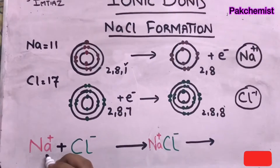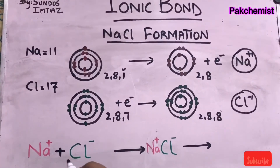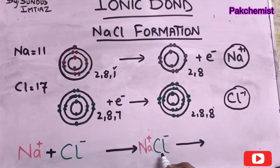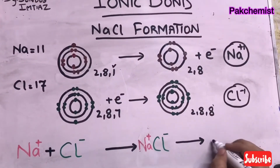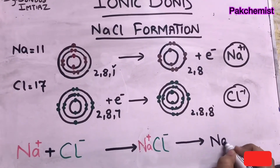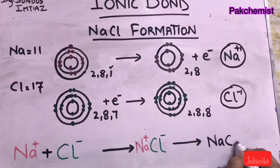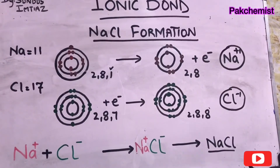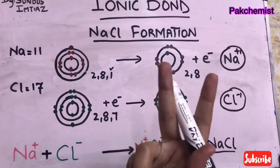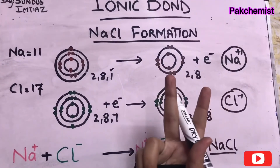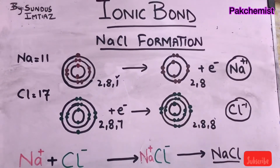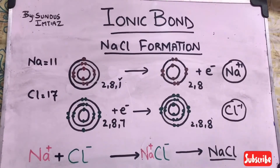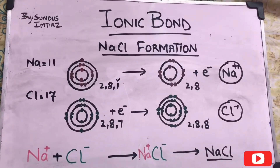When the sodium cation and Cl⁻ anion combine together, they form NaCl. This is how the NaCl ionic bond is formed — both ions are involved. If you like this video, do subscribe and thanks.